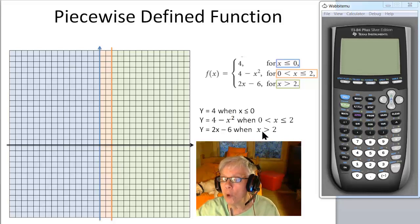And then for x greater than 2, which is this part of the x-axis and everything that goes with it, you're going to graph the line 2x minus 6. So let's take a look at what that would look like.